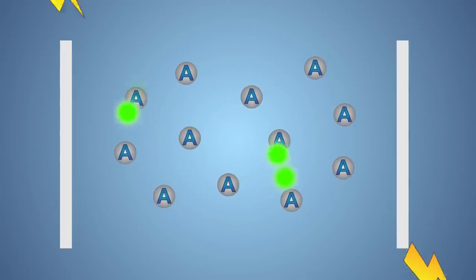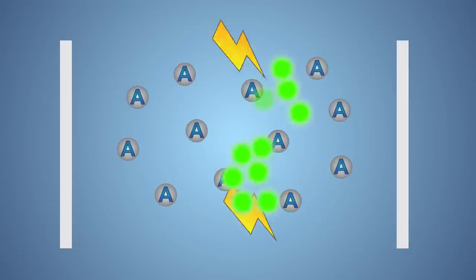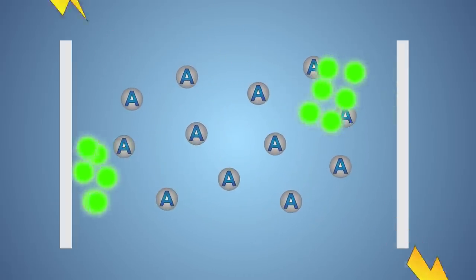The light produced in this reaction is bounced back and forth through the atoms between two mirrors. As the light bounces, it forces the atoms it passes by to produce even more light.